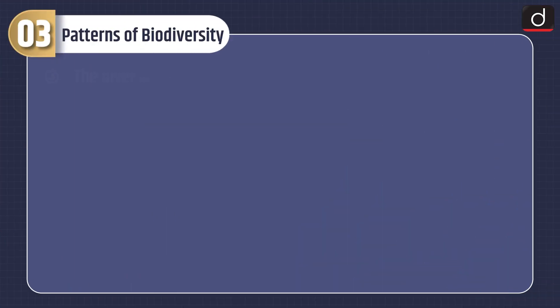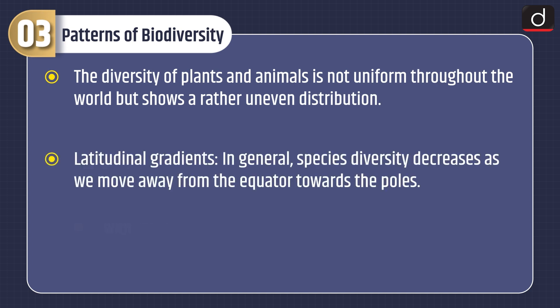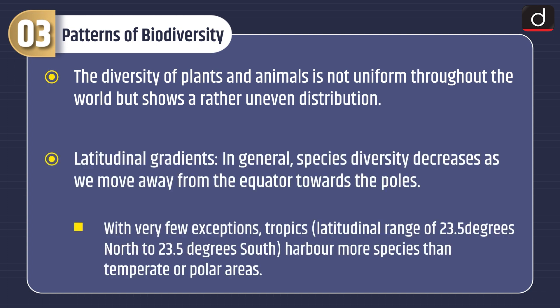The diversity of plants and animals is not uniform throughout the world but shows a rather uneven distribution. Regarding latitudinal gradients, in general, species diversity decreases as we move away from the equator towards the poles. With very few exceptions, the tropics — the latitudinal range of 23.5 degrees north to 23.5 degrees south — harbor more species than temperate or polar areas.